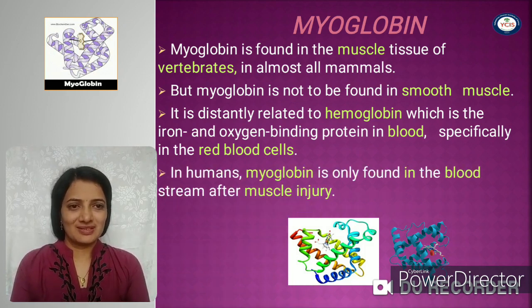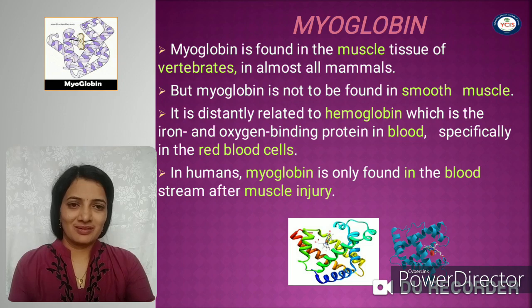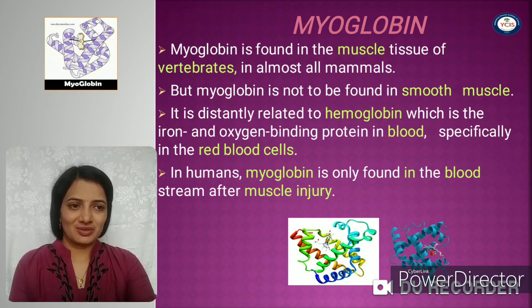In humans, myoglobin is only found in the blood after muscle injury.